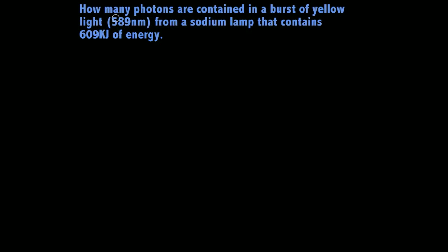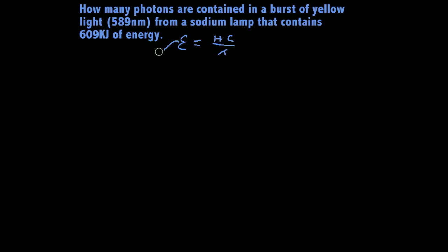I have a formula here that we're going to use. Some professors may give this to you, some may not — it's probably a good one to know. Energy per photon equals Planck's constant, represented by h, times the speed of light over the wavelength. The key thing to remember is this gives you an answer in a per-photon manner — joules per photon.